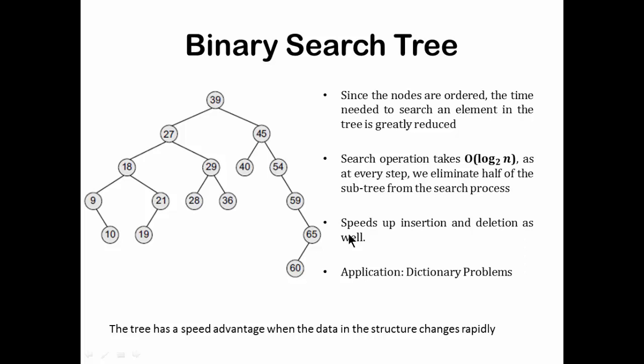It speeds up insertion and deletion as well. In an array, even if it was sorted, you can find the position in order of one, but insertion requires shifting operations, making it an order of N problem. In a linked list, inserting at any random location was also order of N time complexity. But in the binary search tree, the search for the correct position is much faster.